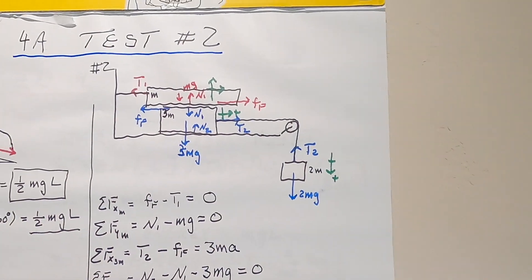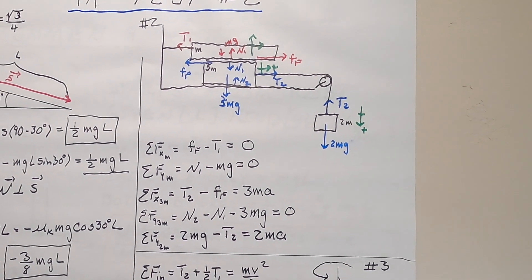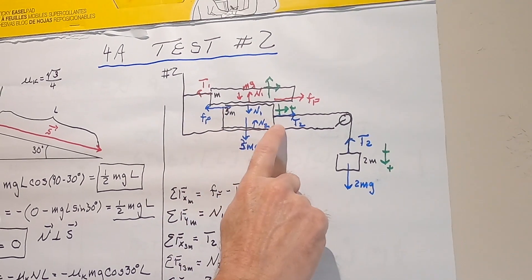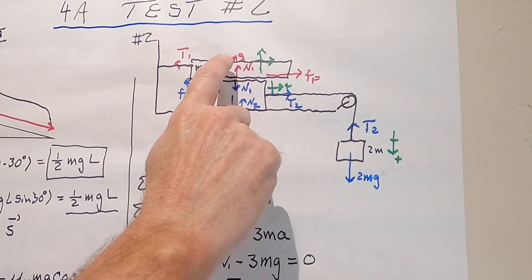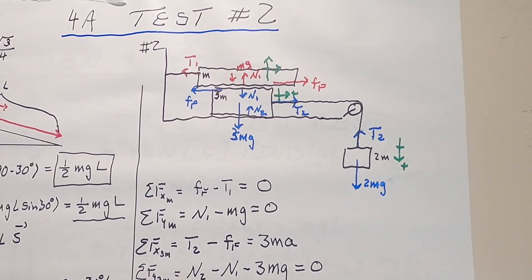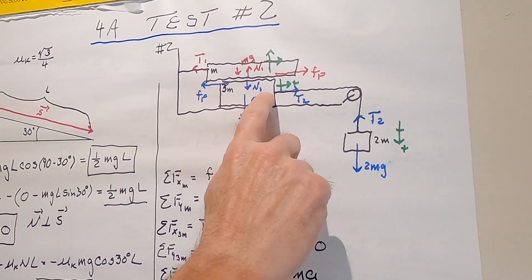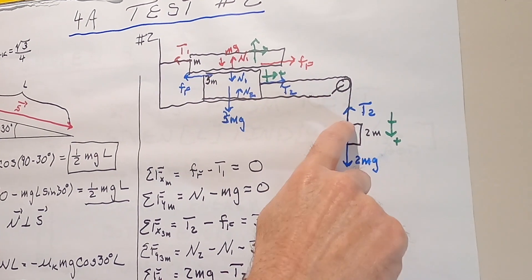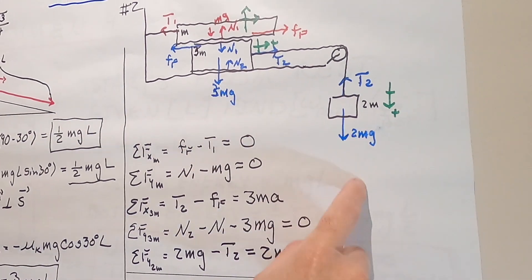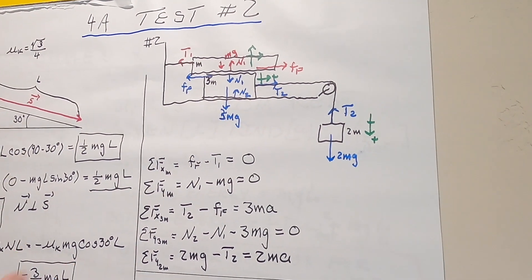Problem number two — I just asked you to write out the forces on three blocks. A block of mass 3m rests on a frictionless surface. A second block of mass m is placed on the first block, and there is friction between the two blocks. The top block has a rope tied to a wall to keep it from moving. The lower block has a rope tied to a 2m block hanging over a pulley. The 2m block accelerates down at A, which means the 3m block accelerates horizontally at A.